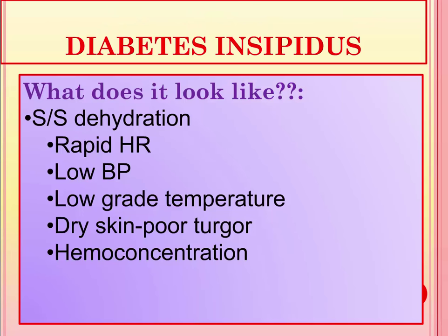What will diabetes insipidus look like? Common manifestations correlate with dehydration, because the patient is unable to keep fluid in. You will see a rapid heart rate, because stroke volume is diminished and the body compensates by increasing heart rate. Low blood pressure and a low-grade temperature are also expected. Skin will be dry with poor turgor. There will be hemoconcentration or increased serum osmolarity. In the urine, there will be decreased urine osmolarity — the urine will be very dilute, while the blood will be very concentrated.